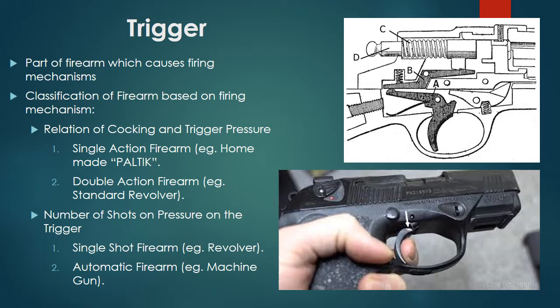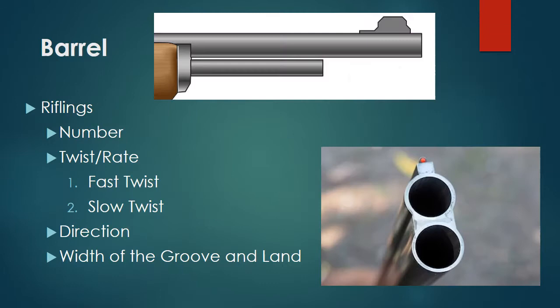Double action firearm — example is a standard revolver. By number of shots per trigger pull: single shot firearm like a revolver, and automatic firearm like a machine gun. As seen in the diagram, the barrel is also identified.